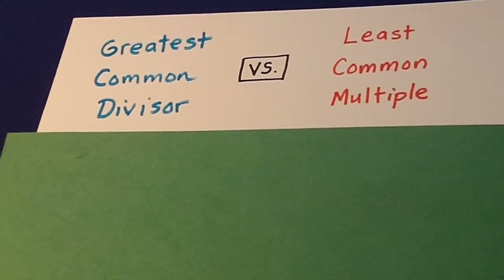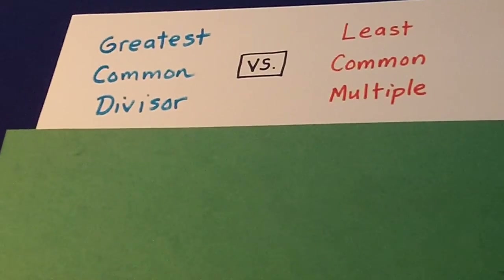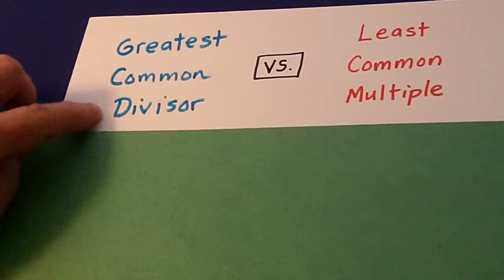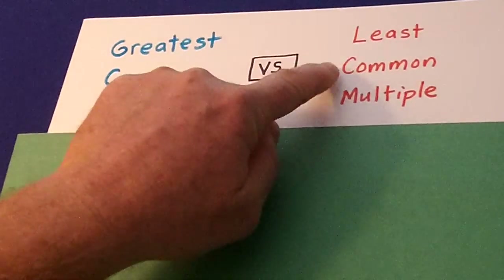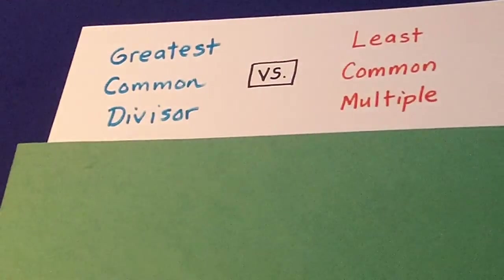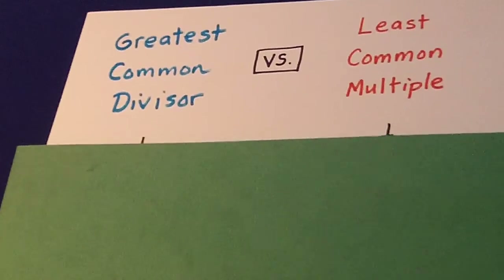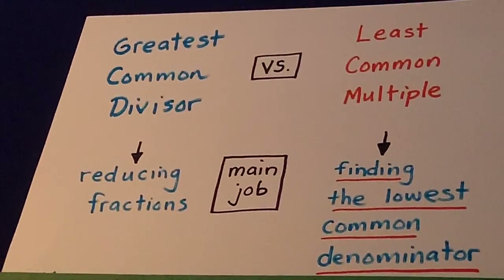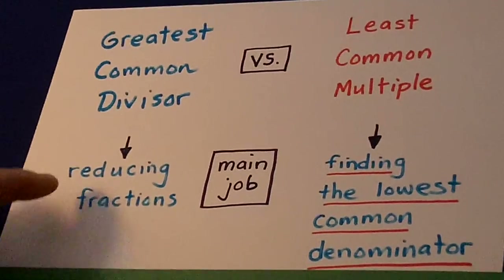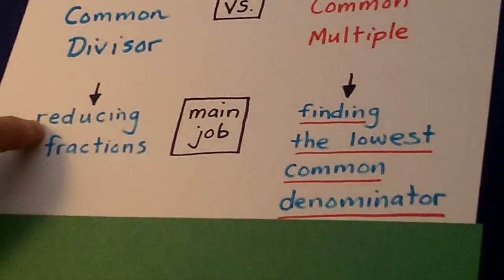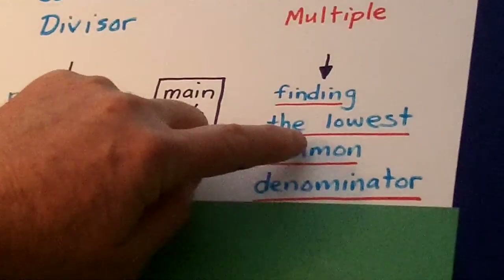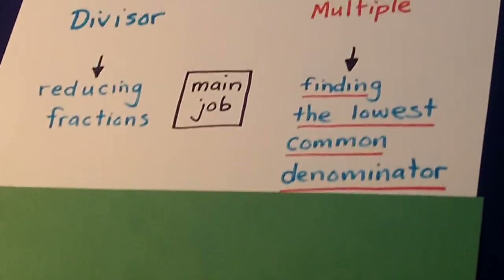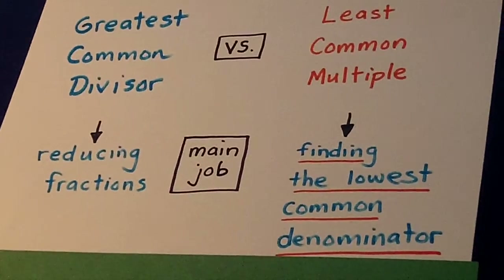In this lesson, we will contrast greatest common divisor versus least common multiple. This is a skill that we need for when dealing with fractions, reducing fractions, or finding the lowest common denominator when adding and subtracting fractions.